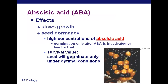It's an evolutionary advantage: seeds only germinate when conditions are right. If conditions are right, moisture helps leach out the abscisic acid. If conditions are not right, the acid stays, the seed remains dormant, and it waits until a better day comes along. Light, temperature, and moisture are all factors for germination.